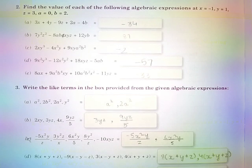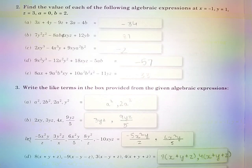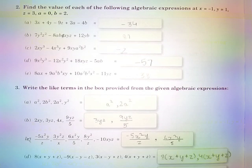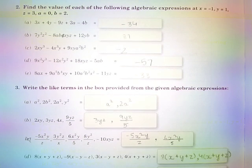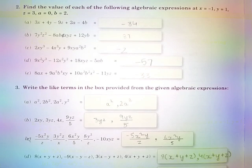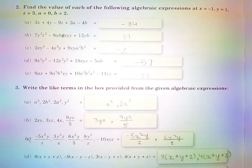Part E: 8ax + 9a⁵b⁴xy + 10a²b²x² − 11yz is equal to −33.